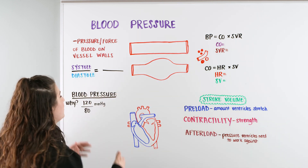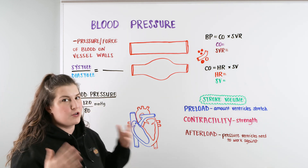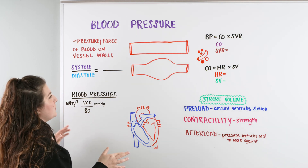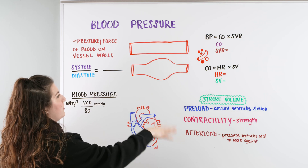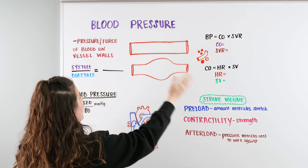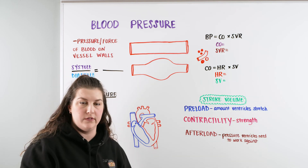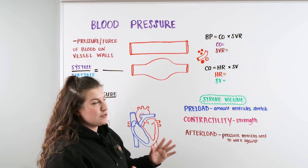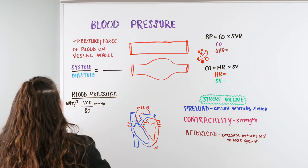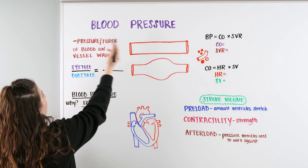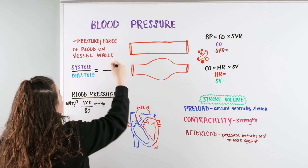So blood pressure — when we talk about that, we're talking about the pressure of blood. Everyone's heard this word blood pressure. And what I want you to focus on today is that we're not only going to talk about just blood pressure, but we're going to talk about some of the comprehensive things that go along with blood pressure, so that when we start talking about medications in the future, we're going to understand what's going on. So first, what is blood pressure? Blood pressure is the pressure or the force of blood on the vessel walls.